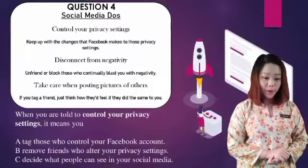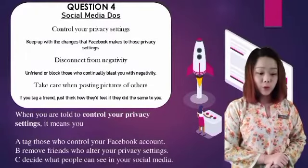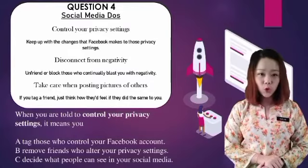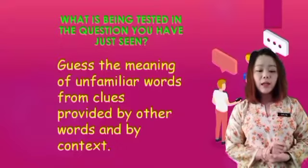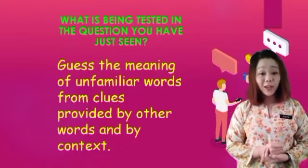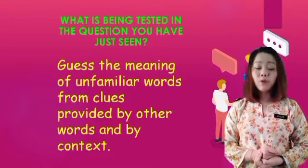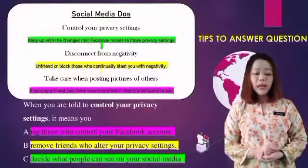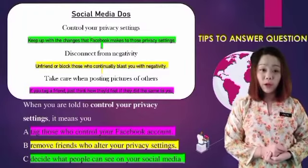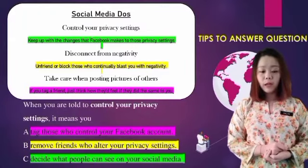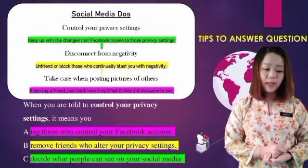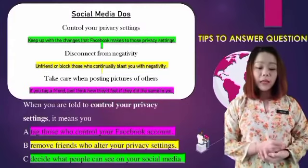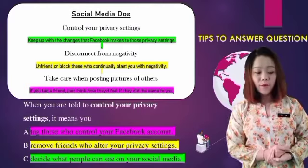Let's move on to question number four, which is about social media deals. The question asks: when you are told to control your privacy settings, it means you... This tests whether you can guess the meaning of unfamiliar words from clues provided by other words and by context. Option A: tag those who control your Facebook account. From the text, tagging friends refers to posting pictures of them and doesn't mention anything about a Facebook account. Therefore, A is wrong.